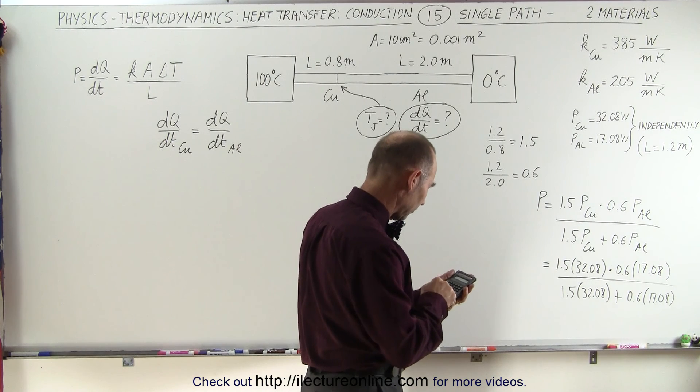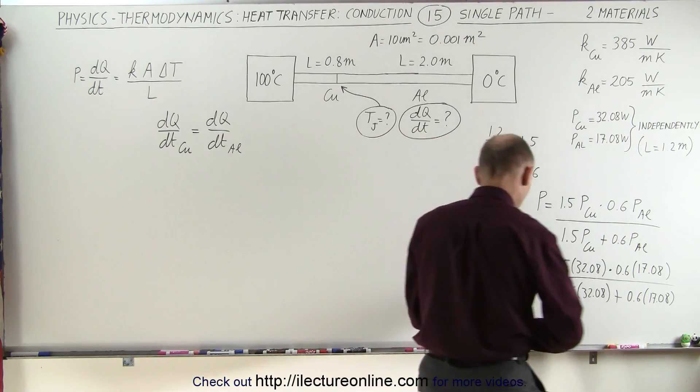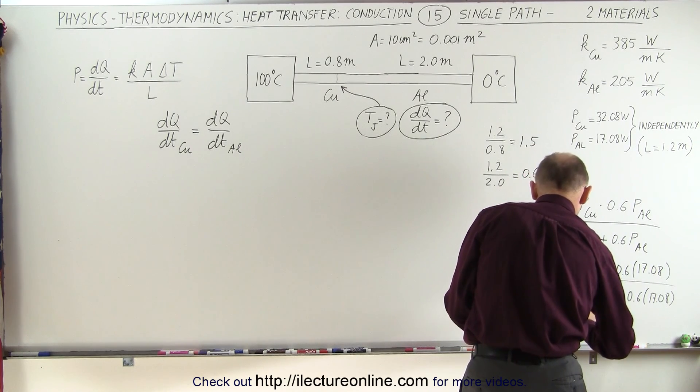Times 1.5 times 32.08 times 0.6 and times 17.08 equals, and that gives us a heat transfer equal to 8.45 watts.